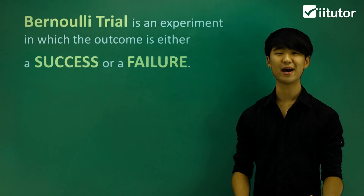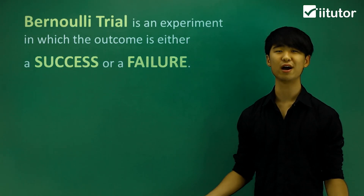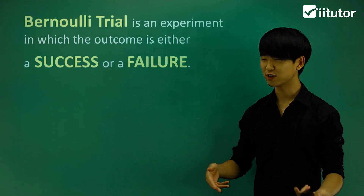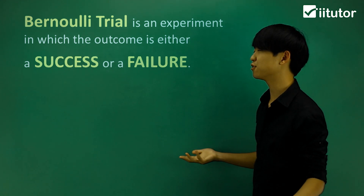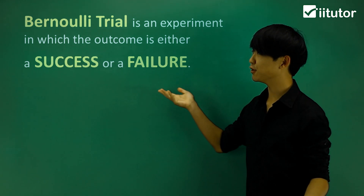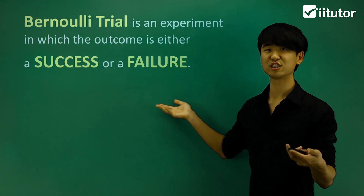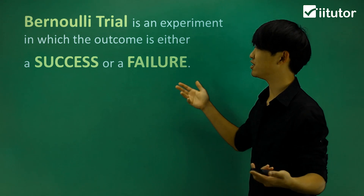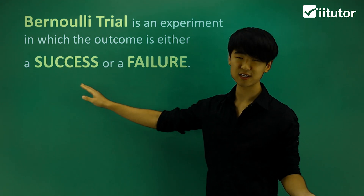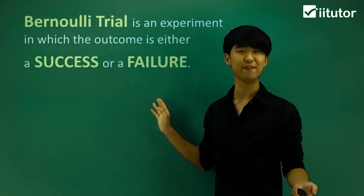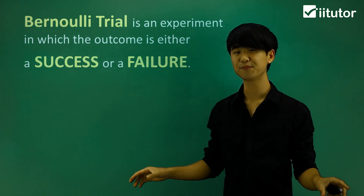We're going to be learning about something called a Bernoulli trial. We've got a nice definition on the board, so let's go through it. A Bernoulli trial is an experiment in which the outcome is either a success or a failure. In other words, it's only got two outcomes.